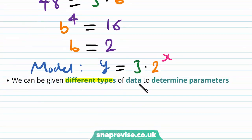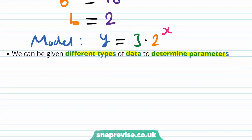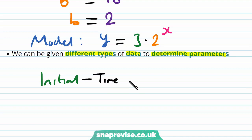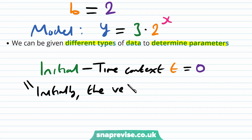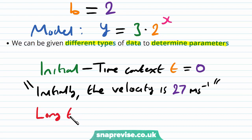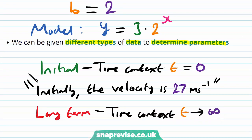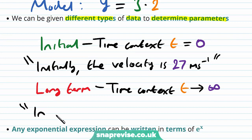We can be given different types of data to determine the parameters. We can be given initial data — this is from a time context when t equals 0. For example, we may be told that initially the velocity is 27 metres per second. We may also be given long-term data, corresponding to t tending to infinity. For example, we may be told that in the long term the velocity tends to 3 metres per second.